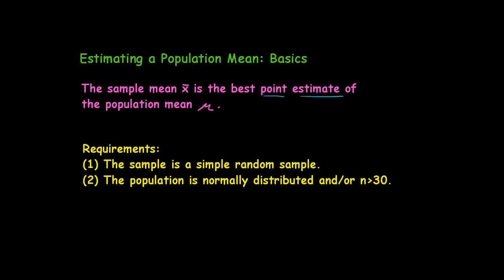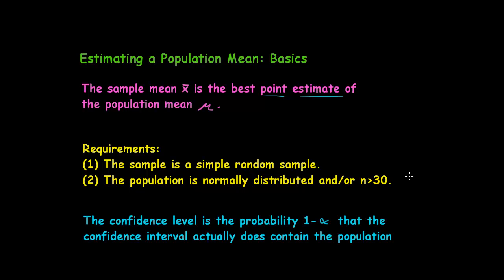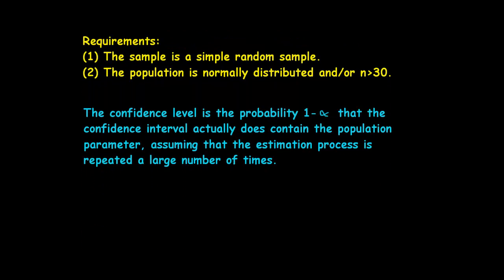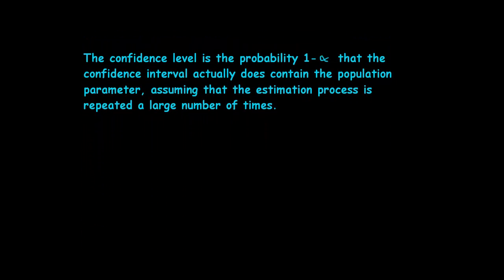As we've seen before, when we studied the estimation of a population proportion, the confidence level is the probability, 1 minus alpha, that the confidence interval that we construct actually does contain the population parameter. In this case, our parameter is mu, assuming that the estimation process is repeated a large number of times.